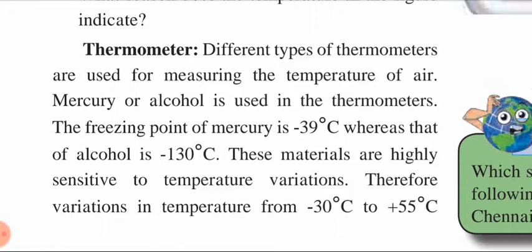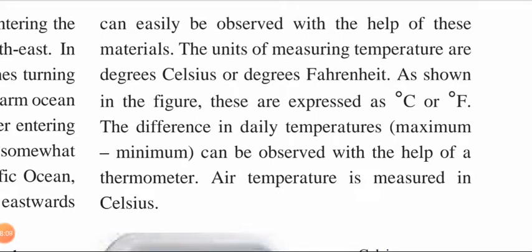Mercury or alcohol is used in thermometers. The freezing point of mercury is minus 39 degrees Celsius, whereas that of alcohol is minus 130 degrees Celsius. These materials are highly sensitive to temperature variations. Therefore, variations in temperature from minus 30 to minus 55 degrees Celsius can be easily observed with their help. The units of measuring temperature are degrees Celsius or degrees Fahrenheit. The difference in daily temperature — maximum or minimum — can be observed with the help of a thermometer.